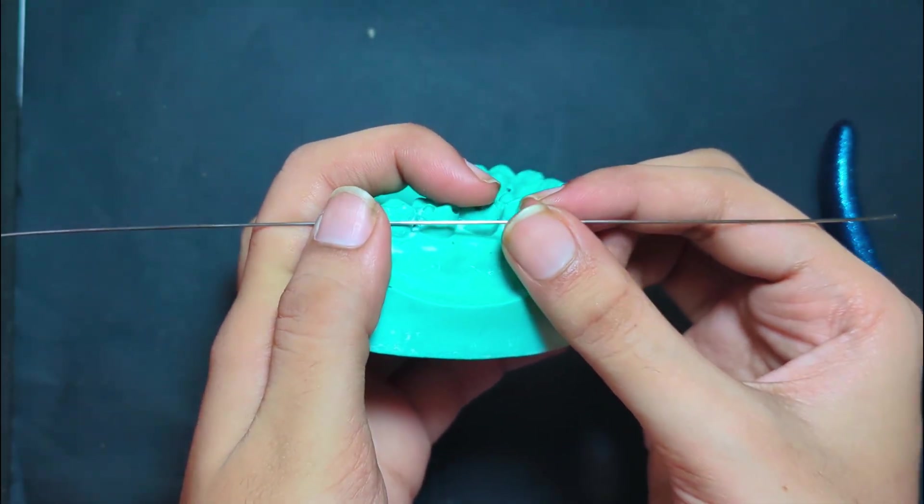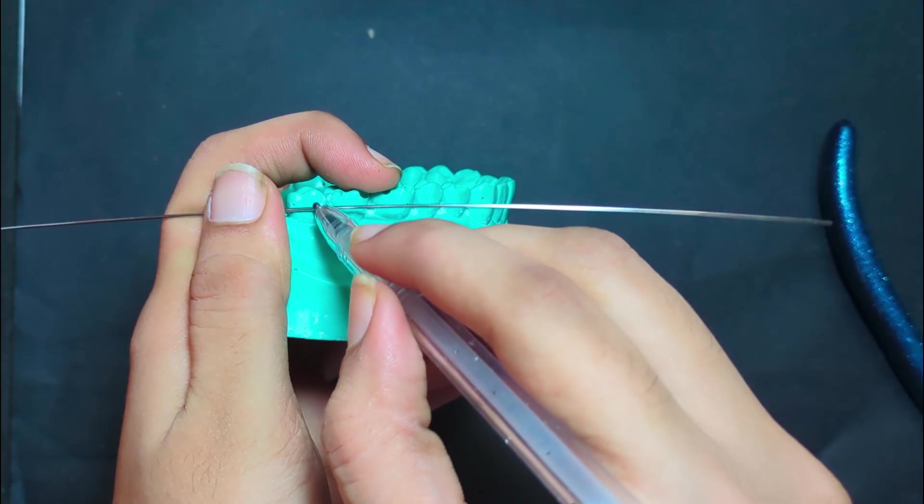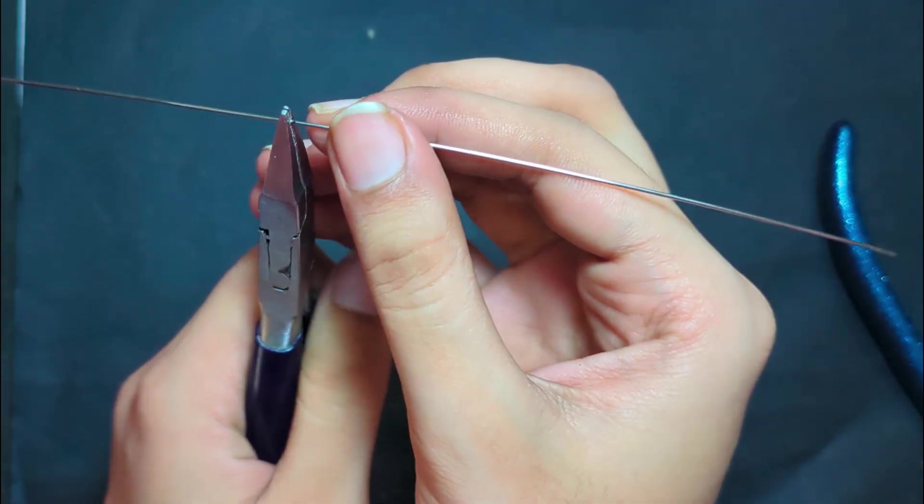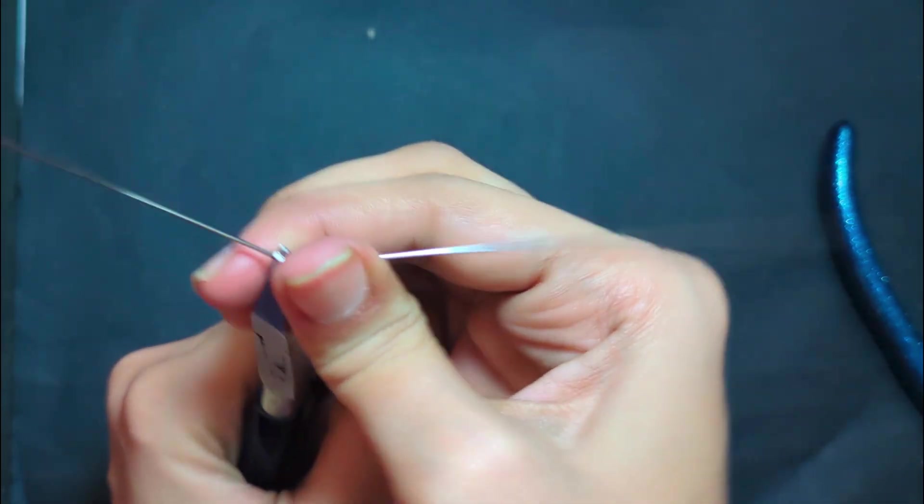Near the middle of the tooth, mark a point along the center of the cusp. Then give a 90-degree bend using Adams pliers.